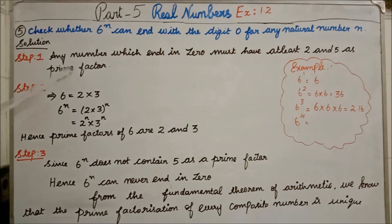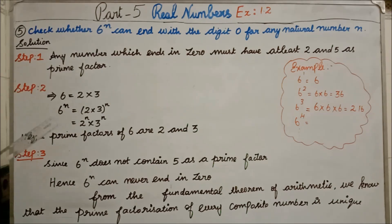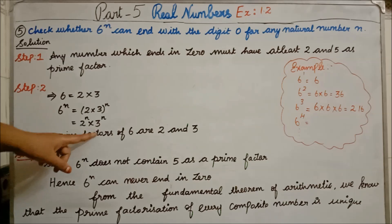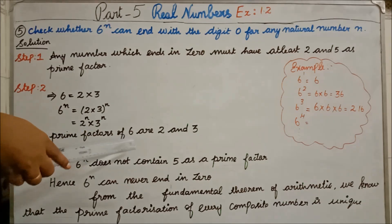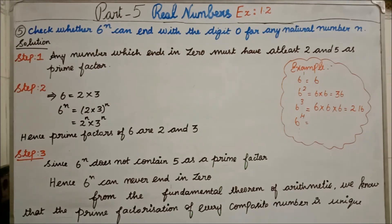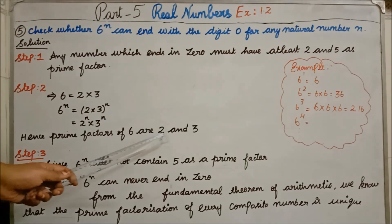Step 2: The value given is 6. The prime factors of 6 are 2 × 3. So 6^N = (2 × 3)^N = 2^N × 3^N. Hence, the prime factors of 6 are 2 and 3. But the condition for ending in 0 requires the factors 2 and 5. Here we are getting 2 and 3 for 6.